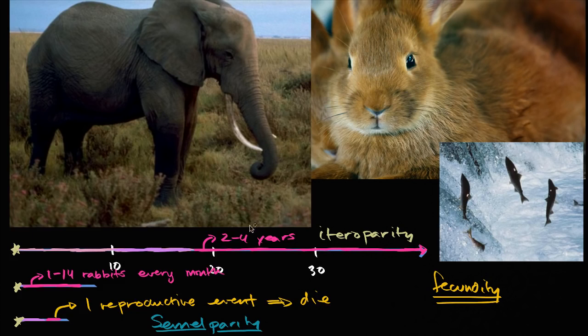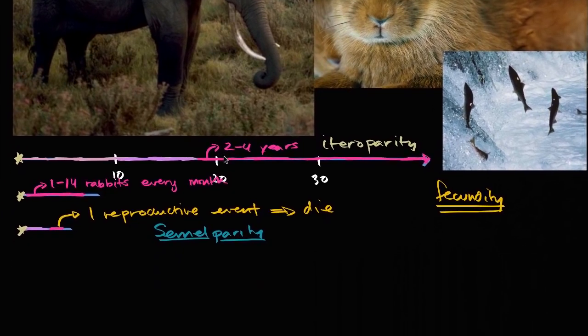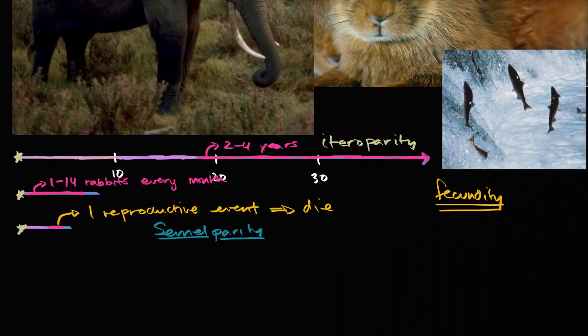And what's fascinating about all of this is, why is there so much variation here? Why has nature selected for, or why have these species found niches in which they can operate, in which it makes sense, where natural selection has selected for these very different lifespans, these very different reproduction rates, this variation in fecundity, sometimes iteroparity, sometimes semelparity? It is a bit of, it's not a mystery. People are studying this and they have good hypotheses, but we don't know for sure, especially from species to species.